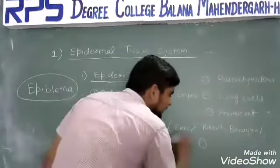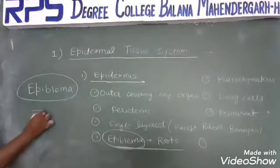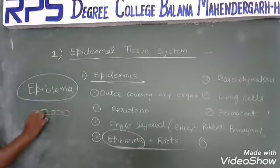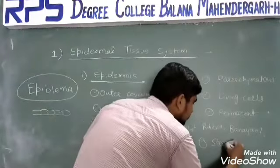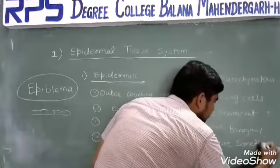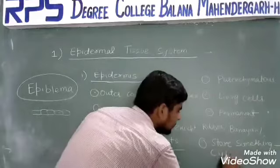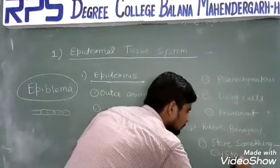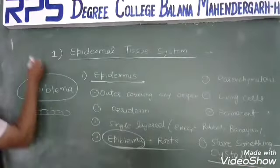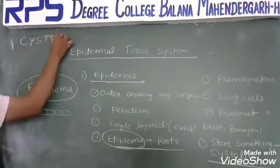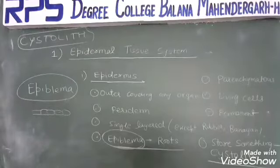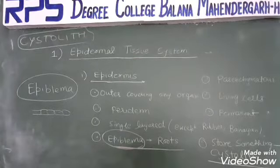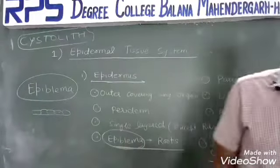If epidermal cells store something — although the epidermis is mainly meant for protection — those cells storing something would be called cystoliths (C-Y-S-T-O-L-I-T-H). So this is clear about the epidermis, which is the major part of the epidermal tissue system.